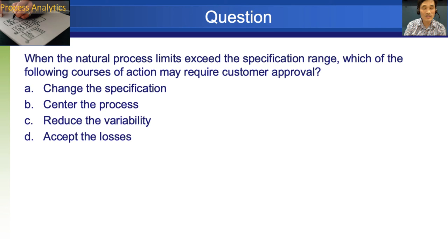Let's go over a few questions together. When the natural process limits exceed the specification range, which of the following courses of action may require customer approval. So if there are too much gap, then what happens is that we need to really talk with the customers and change the specification itself. It may be too narrowly defined and need to be broadened. So the answer is A.